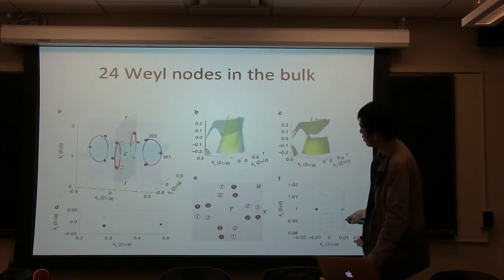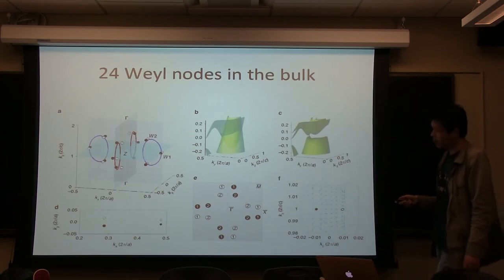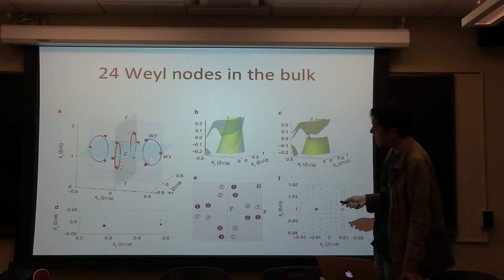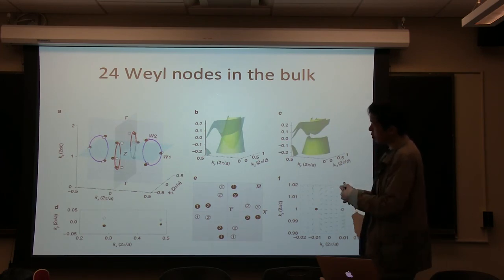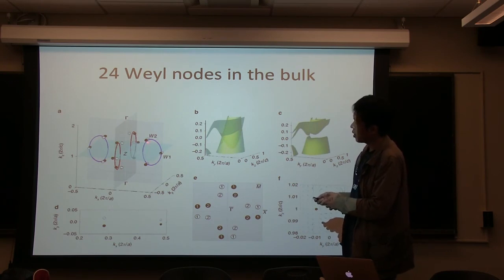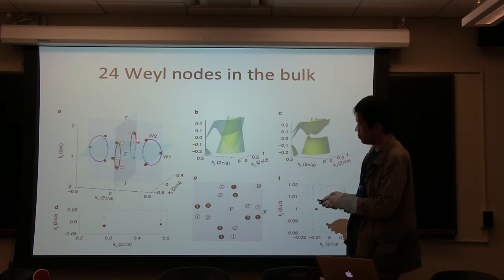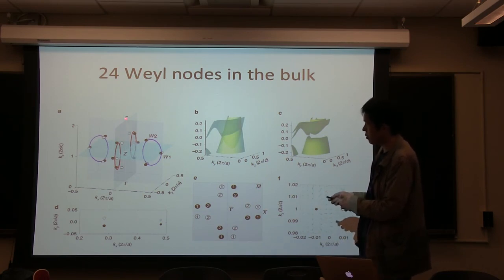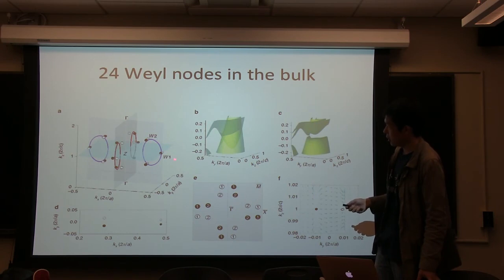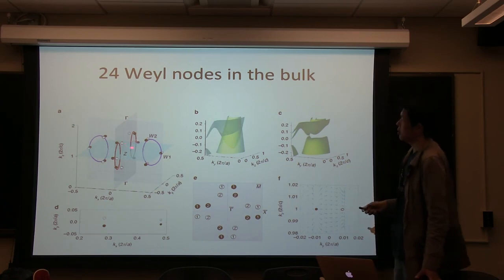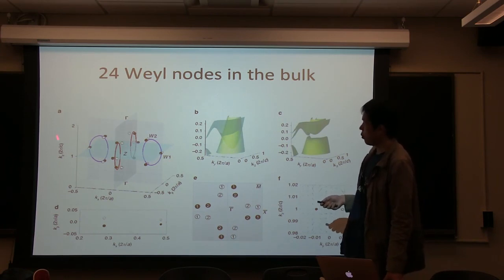Here is the answer for tantalum arsenide. Without spin-orbit coupling, the band crossings are actually one-dimensional — the conduction band and valence band dip into each other forming ring-like one-dimensional touchings, and in the first Brillouin zone there are four of them on the kx=0 and ky=0 planes. When spin-orbit coupling is added, the nodal lines themselves are gapped out, but slightly away from the nodal lines there are point-like touchings. In total there are 24 Weyl nodes in tantalum arsenide. We name the 8 Weyl nodes on the kz=2π/c plane as W1, and the other 16 away from this plane as W2.